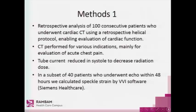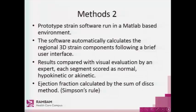We retrospectively analyzed 100 consecutive patients who underwent cardiac CT using a retrospective helical protocol, which enabled us to evaluate the cardiac function. The CT was performed for various indications, mainly angina. In a subset of 40 patients who underwent echo within 48 hours, we calculated the echo strain by a VVI software. The prototype strain software ran in a MATLAB-based environment and automatically calculates the regional three-dimensional strain components following a brief user interface. The results were compared with visual evaluation by an expert, and each segment was scored as normal, hypokinetic, or akinetic.